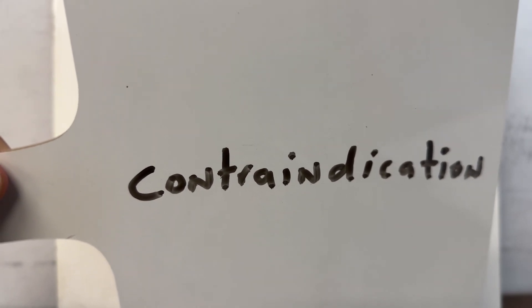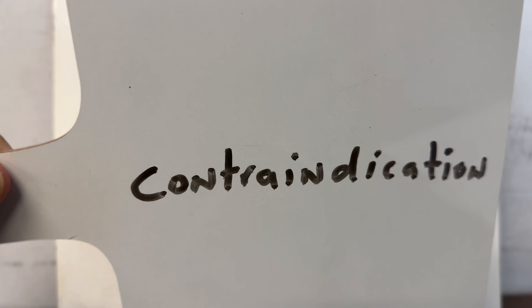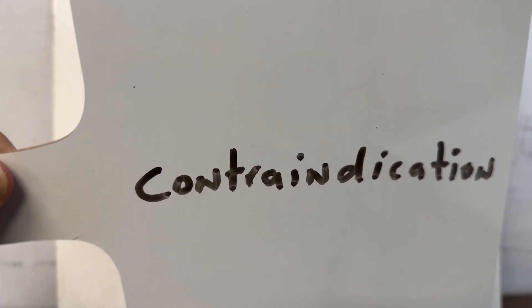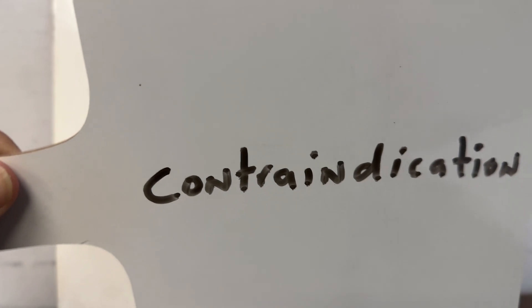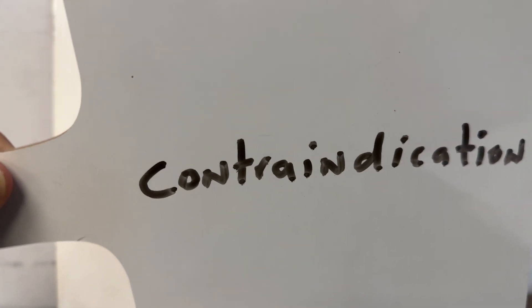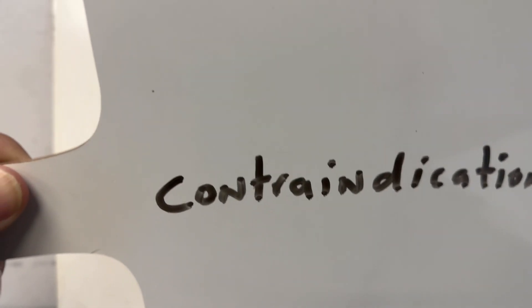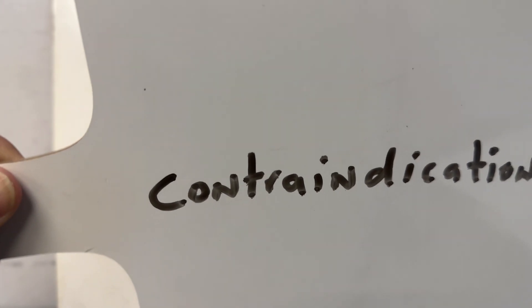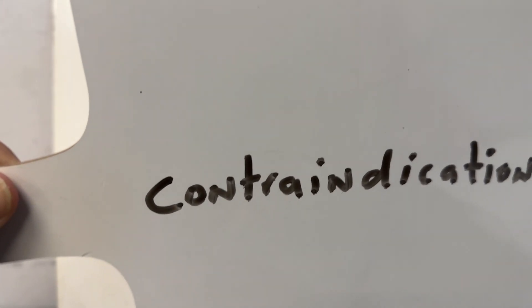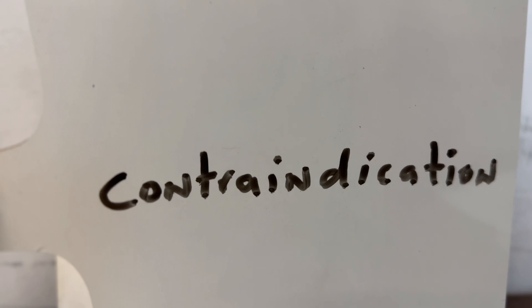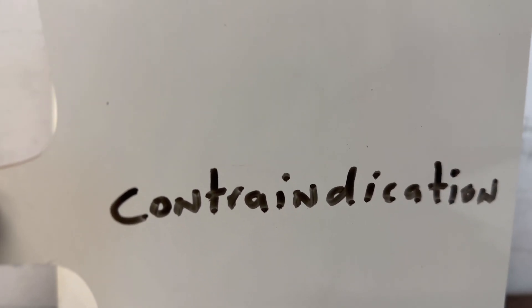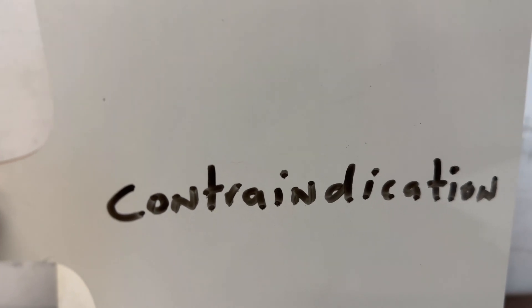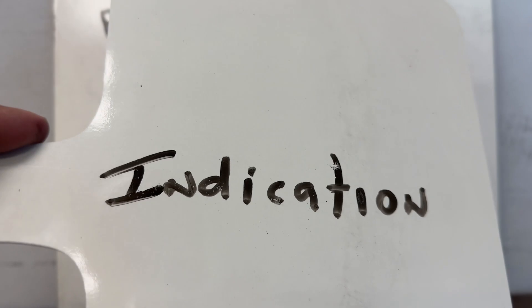The contraindication is any conscious patient, or any unresponsive patient who has an intact gag reflex. The gag reflex is that wrenching or gagging response — like when you put your finger down your throat. Using an OPA in those cases can be detrimental. Any patient, conscious or unconscious, with an intact gag reflex should not have an OPA used.